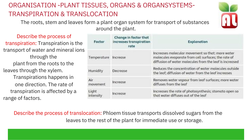As air movement increases, the rate of transpiration increases. This explains why on a windy day, plants are losing more water, as water vapour from the leaf surface diffuses from the leaf. As light intensity increases, the rate of transpiration increases. This is due to the increased rate of photosynthesis, as stomata open so that water diffuses out of the leaf.